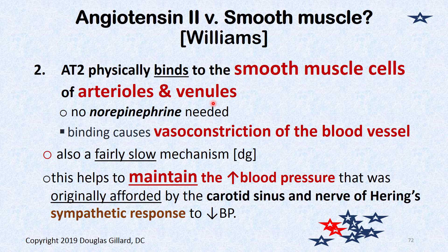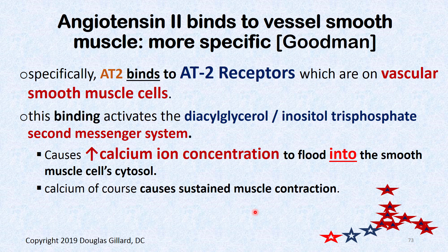Angiotensin II versus smooth muscles. AT2 receptors are also found on smooth muscle cells of both the arterioles and venules, and angiotensin II binds directly to them — you don't need norepinephrine as a middleman. The sympathetic system binds to the tunica adventitia and releases norepinephrine, but angiotensin II goes right to the smooth muscle cells and causes vasoconstriction, raising pressure. This helps maintain elevated blood pressure and is an important mechanism.